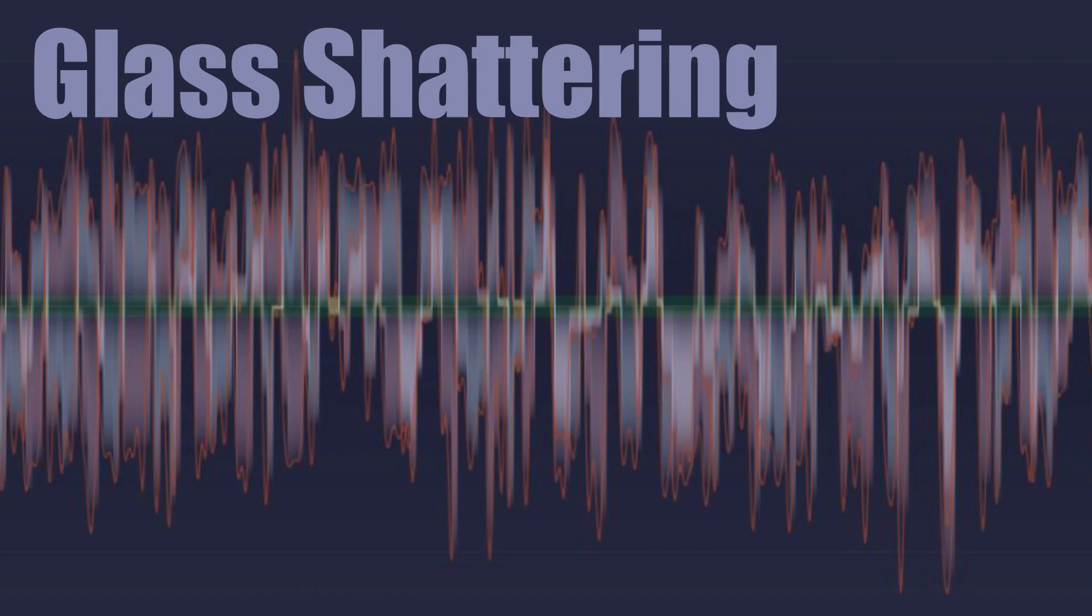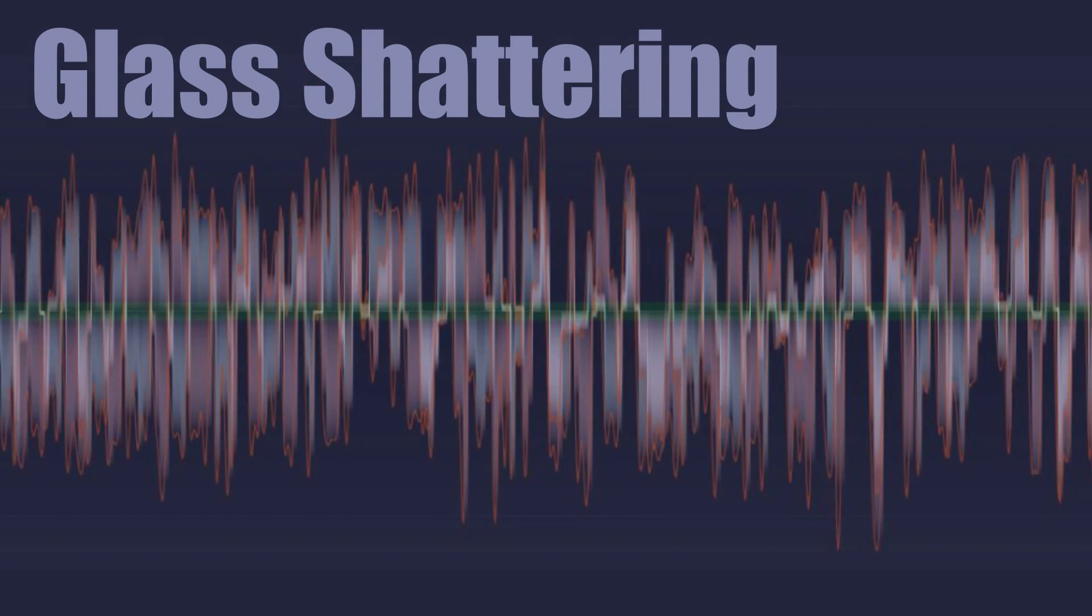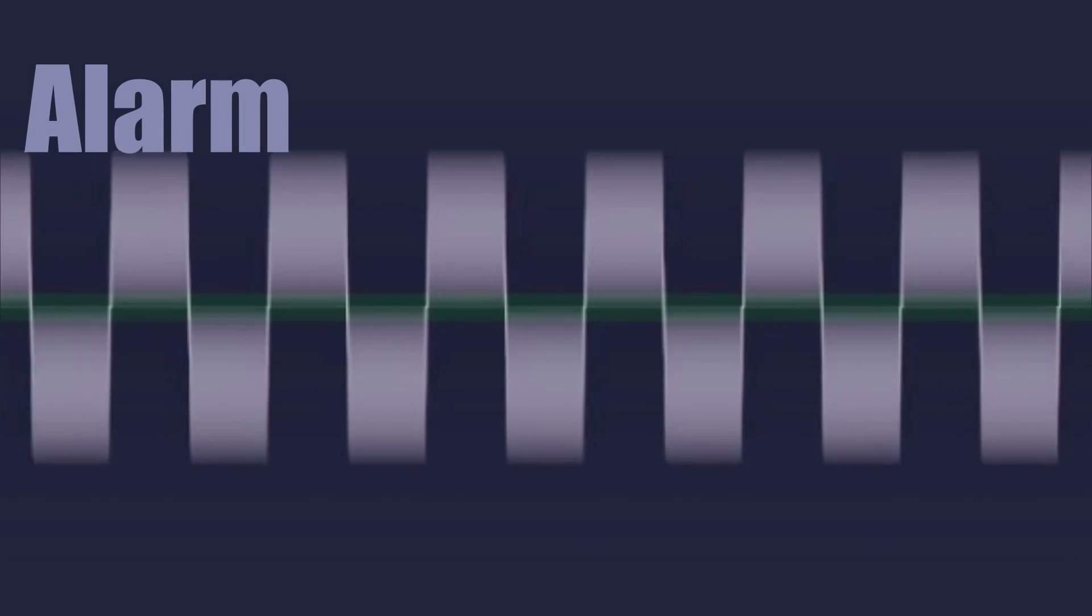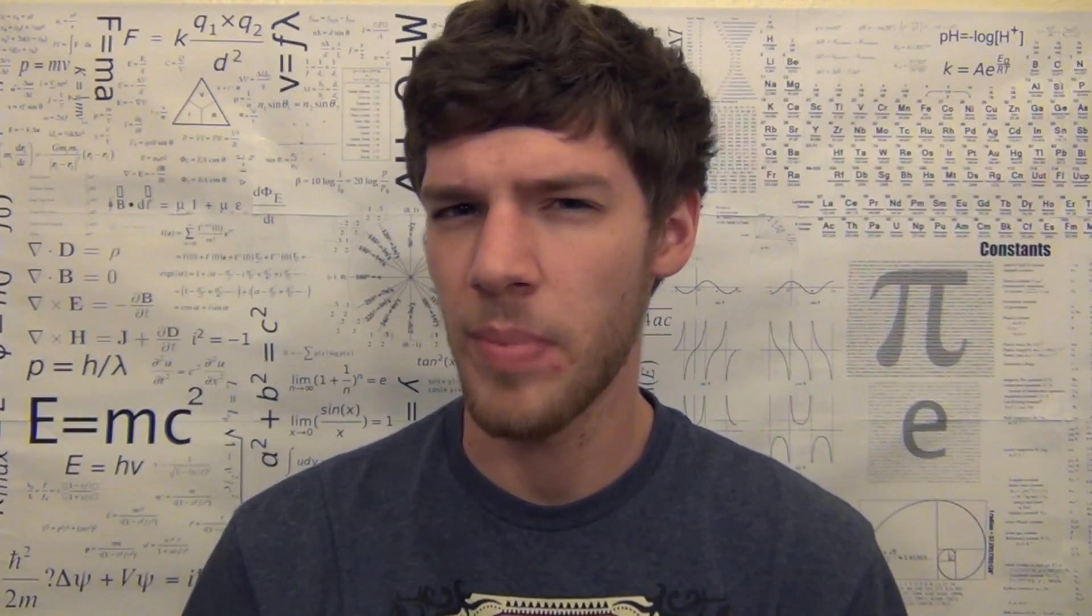As you can see, sounds that are more pleasant to our ears are more smooth and sinusoidal, whereas sounds that are unpleasant are sharp or square waves. So square waves are more bothersome to our ears than sine waves. That's the observation.